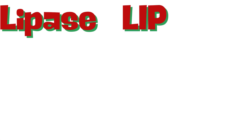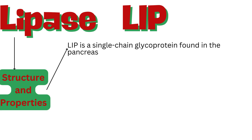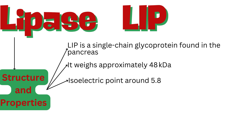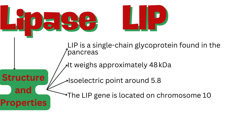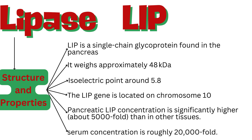Lipase, often abbreviated as LIP, is a fascinating enzyme. Lipase is a single-chain glycoprotein found in the pancreas, weighing approximately 48 kilodaltons. Its isoelectric point is around 5.8, and the LIP gene is located on chromosome 10. Pancreatic LIP concentration is significantly higher — about 5,000-fold compared to other tissues — with a serum concentration gradient roughly 20,000-fold.